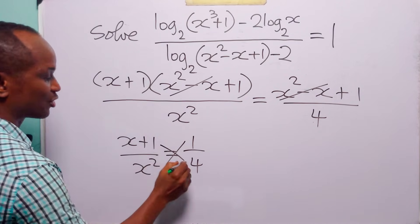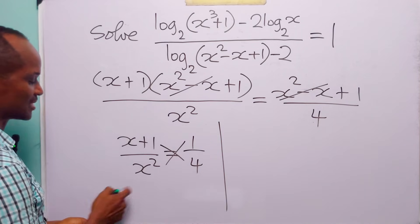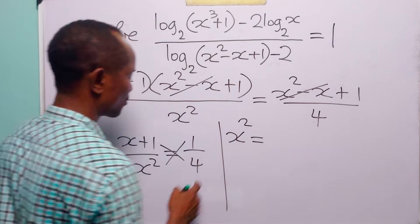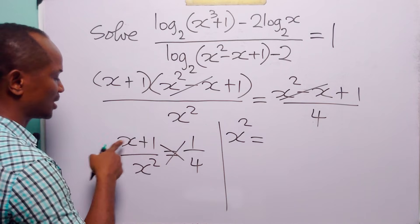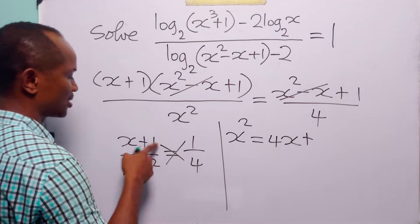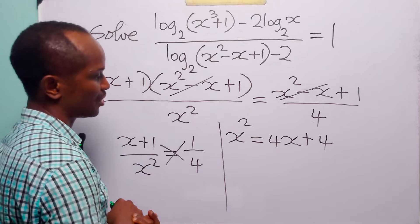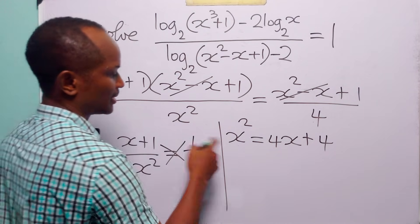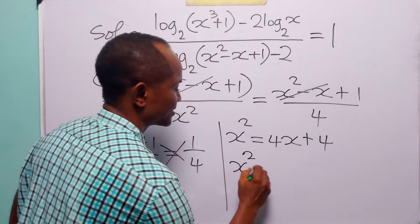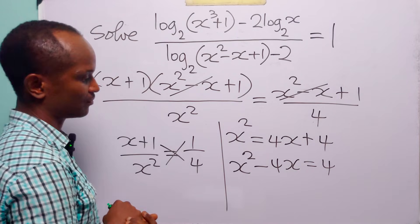Now we can cross multiply. When we cross multiply, we have that x squared times 1 is equal to 4 times x plus 4 times 1, which of course is equal to 4. Let us rearrange this quadratic equation: x squared minus 4x equals 4.